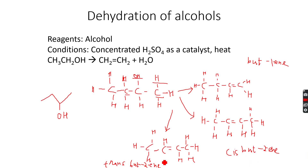Cis-butene and trans-butene — so I can get three different isomers from this dehydration reaction. This is what you need to keep in mind when you are doing a dehydration reaction.